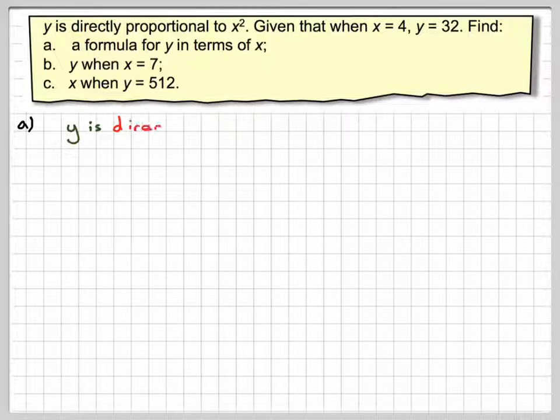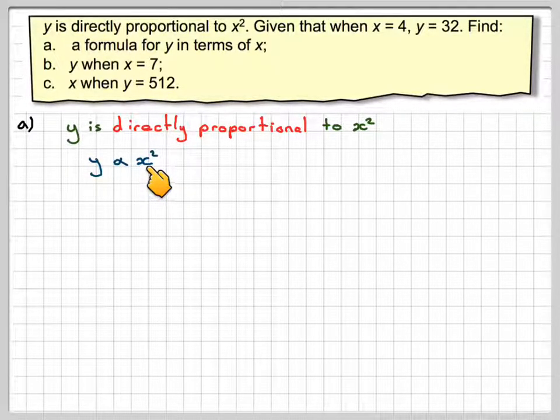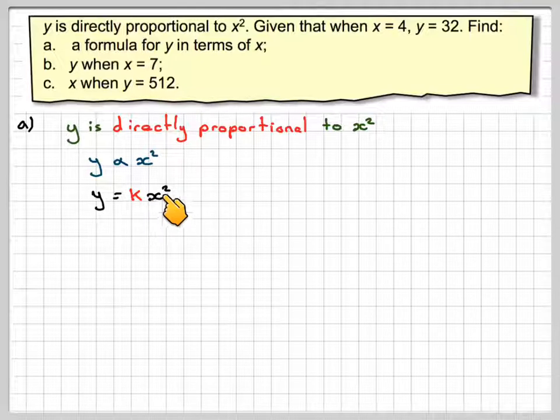What we say is that Y is directly proportional to X squared. That means that Y is equal to some constant times X squared, and we can use the bit of information that we have here to find the value of the constant.